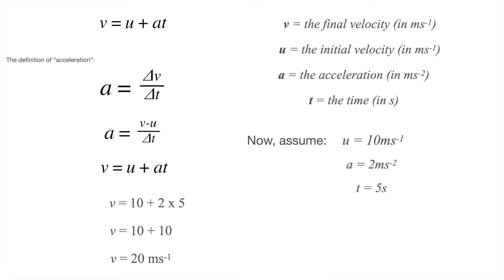Almost all physics hitherto — without constructor theory — is little more than this: you have equations, plug in initial conditions, and predict whatever future state of the system you want. Give me a law of physics like V = U + AT, tell me the initial conditions — U, A, and T — and I will predict any future state of the system at whatever time you like.